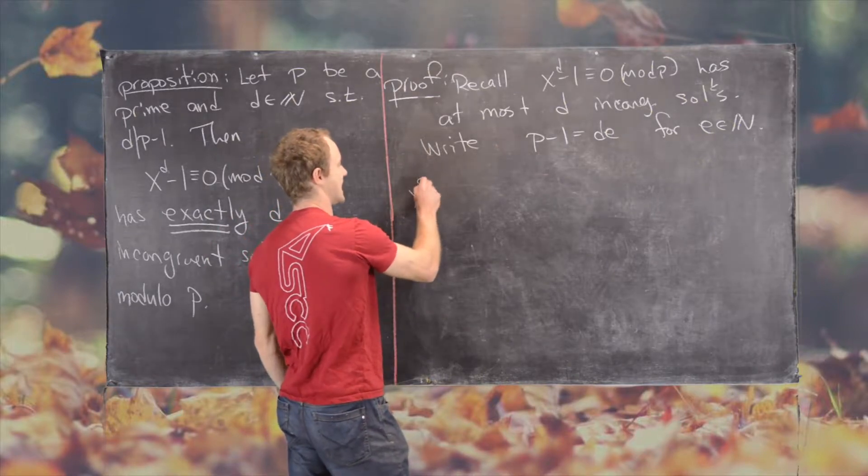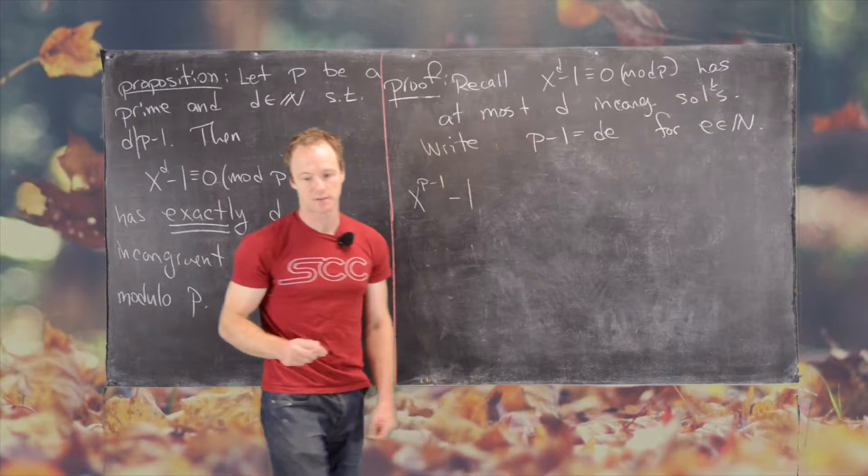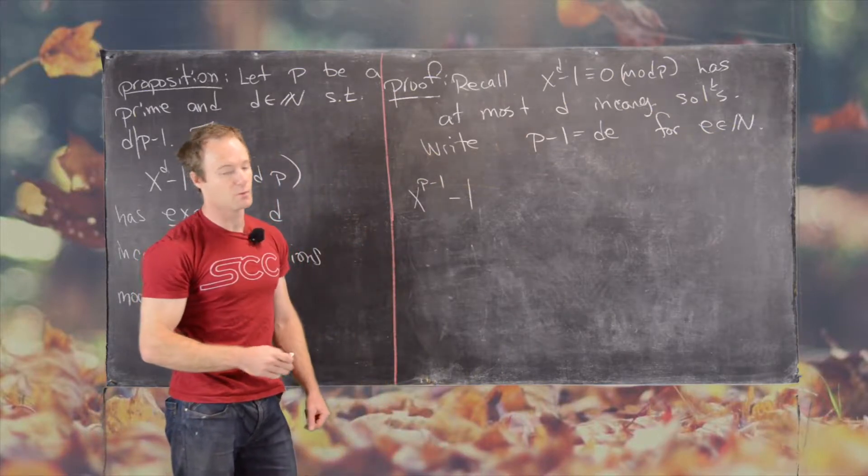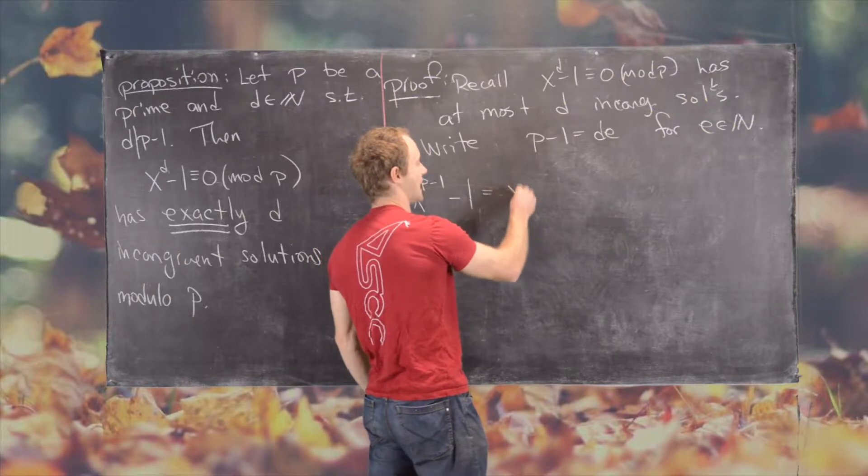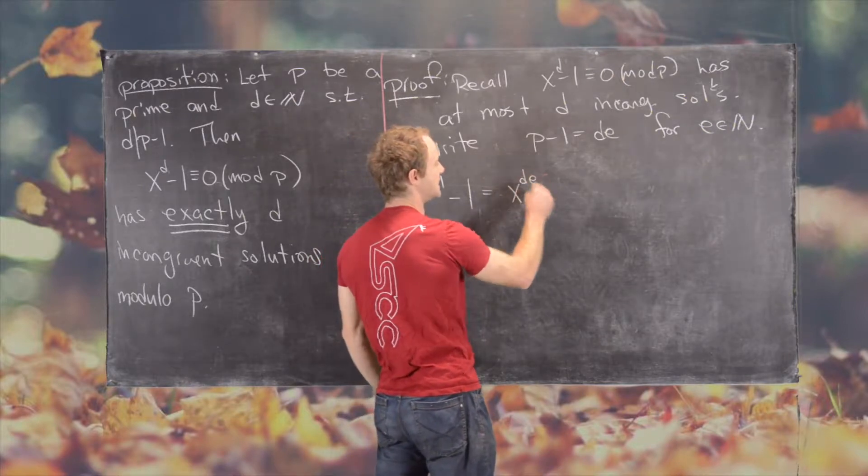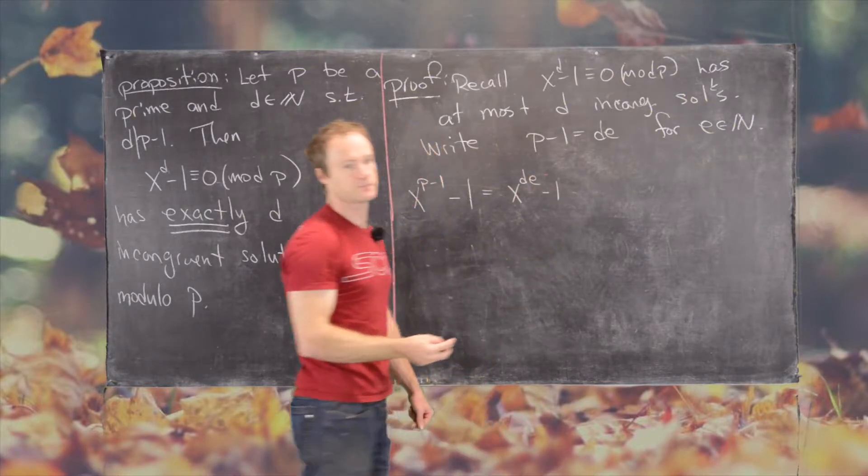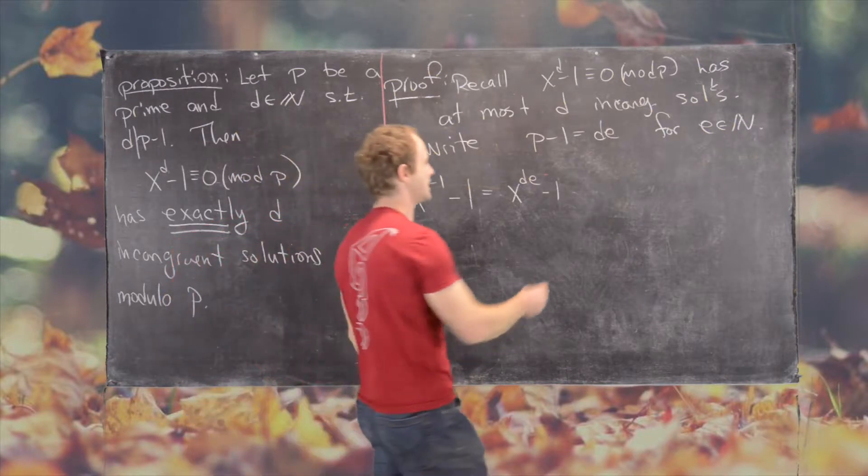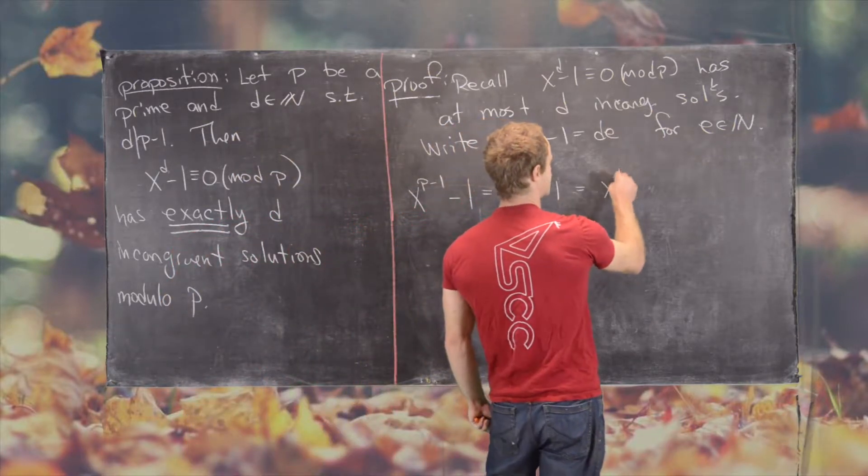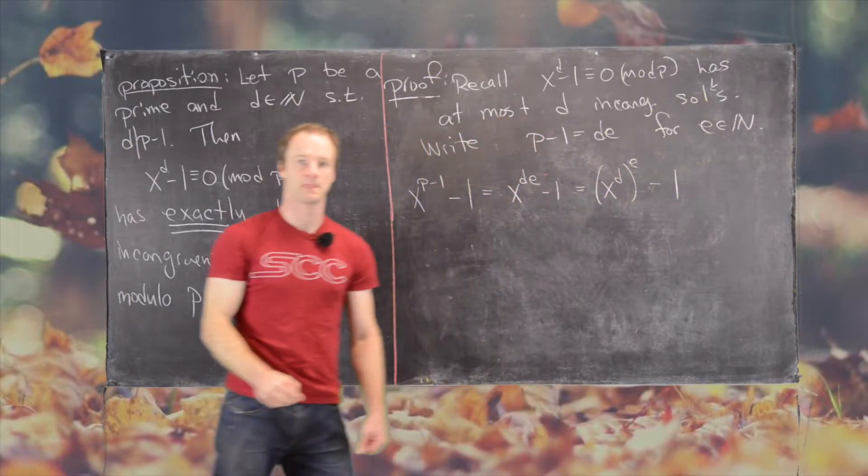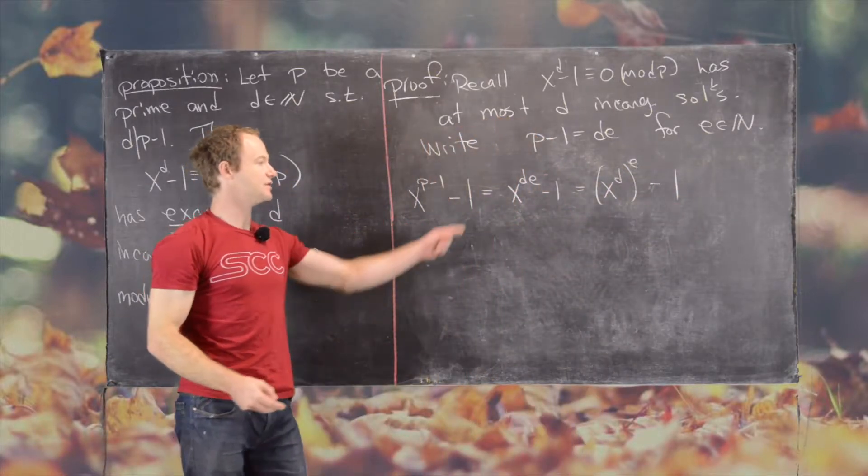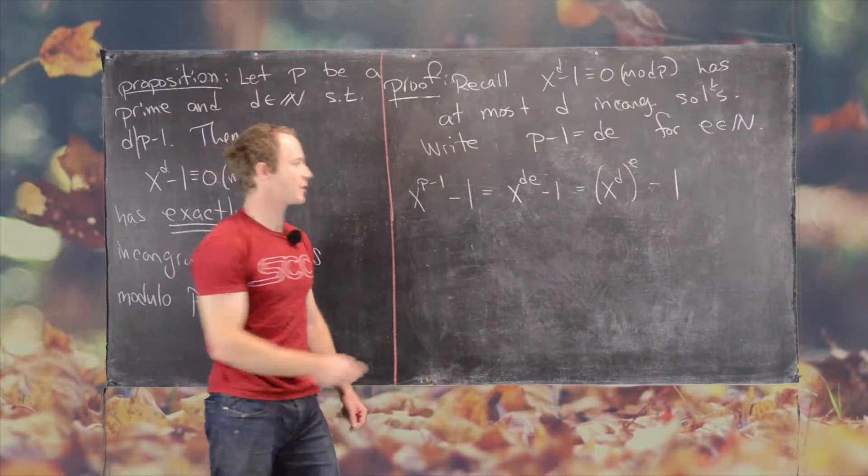So we'll take x to the p minus 1 minus 1 and we'll factor it as follows. We'll first write it as x to the de minus 1, which we can write as x to the d to the e power minus 1. And then we can use a standard factoring formula here.